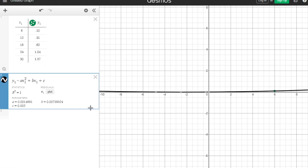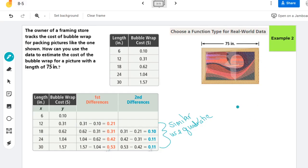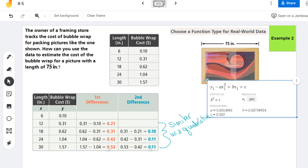And so I believe that Savvas' R-squared statistic is a little bit better than our Desmos' R-squared statistic. Because we know this isn't a perfectly quadratic thing because these differences aren't all the exact same. They're not all .11.